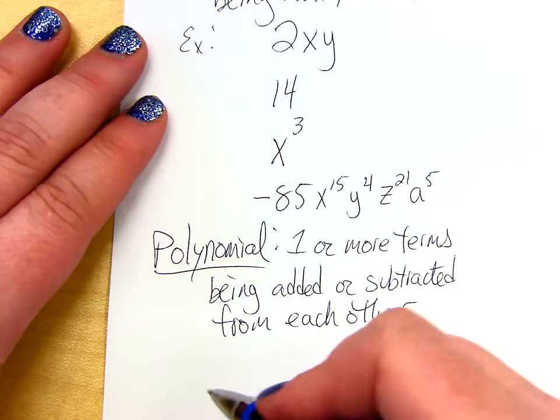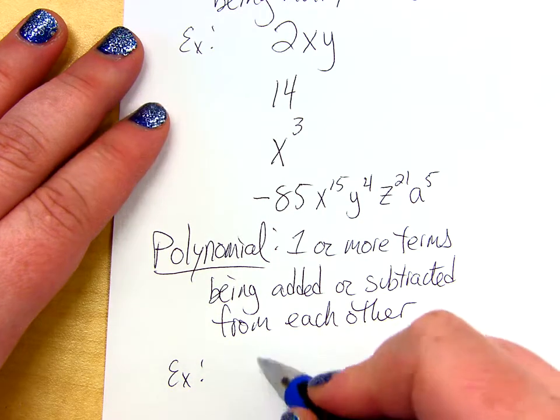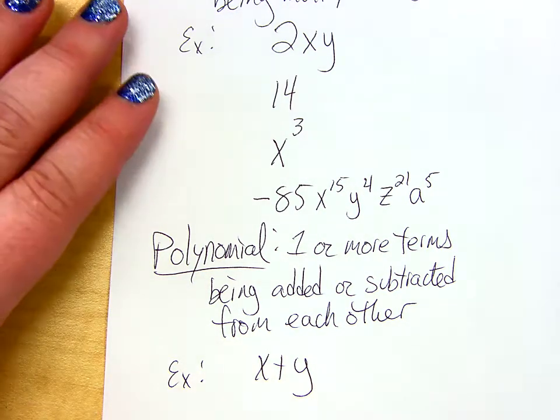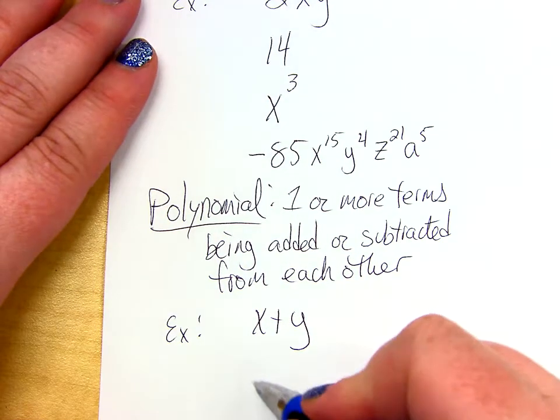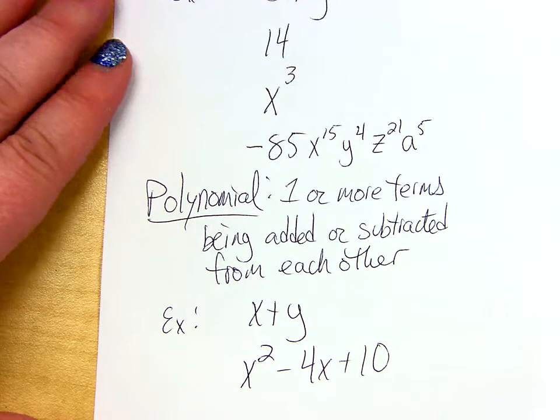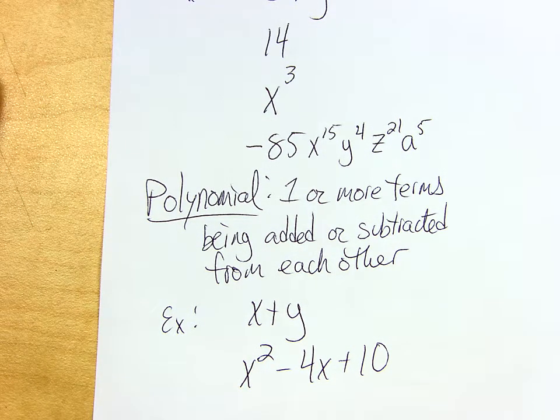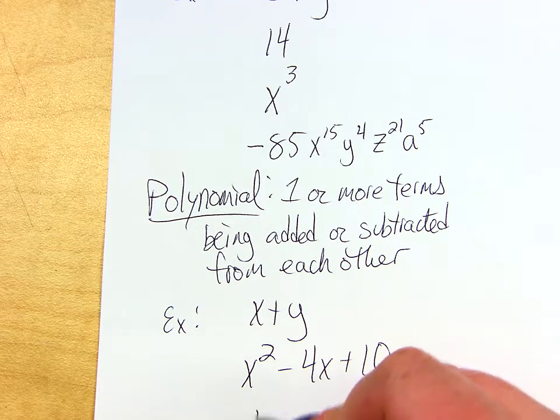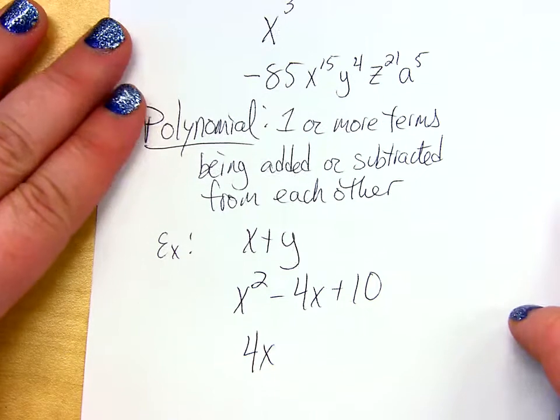So, some examples of polynomials are x plus y. That would have two terms in it. x was one of them, y is one of them. Another polynomial might be x squared minus 4x plus 10. How many terms would that polynomial have? Three. Three. Yeah.